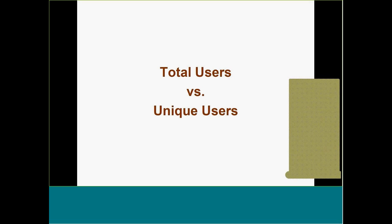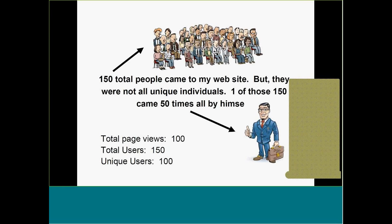The next piece of data we need is total users and unique users. Unique users are very much akin to the circulation of your magazine. Here's an example: say 150 total visits are recorded by the web server, but one person named Bob comes to the website 50 times all by himself. The server records 150 total visits, but only 100 unique people actually came by — because Bob really likes you. Bob came by the website 50 times by himself.